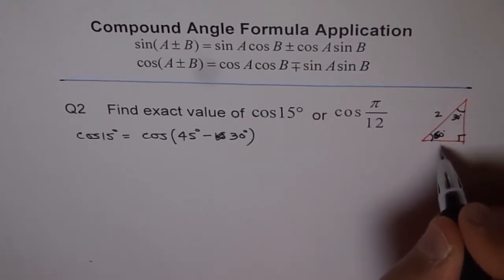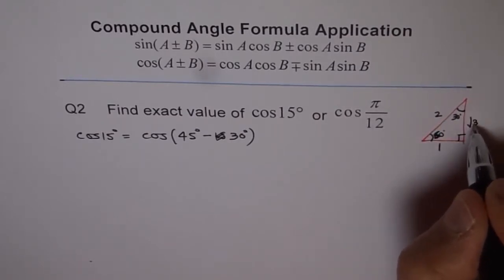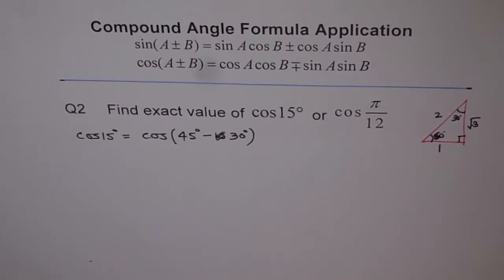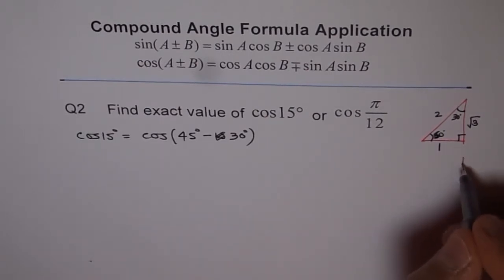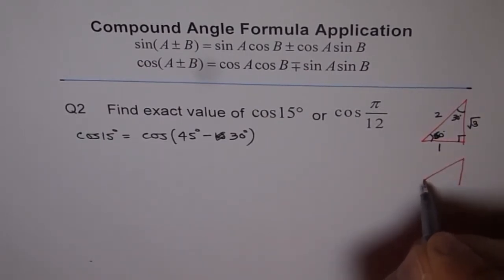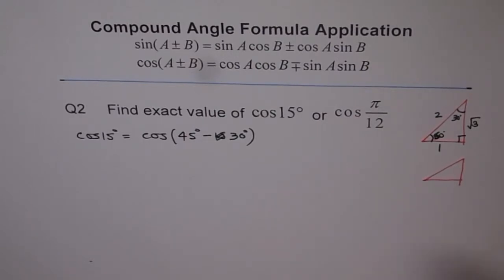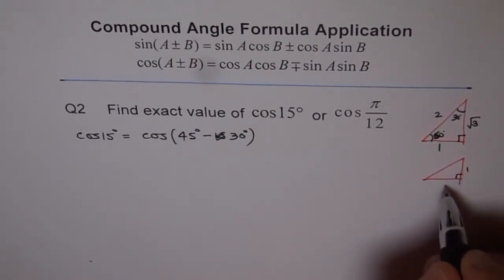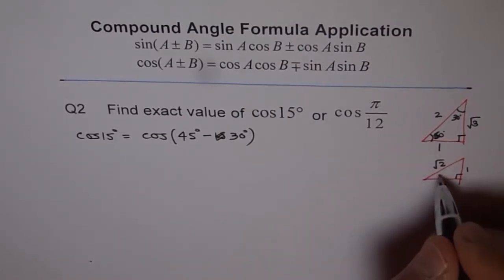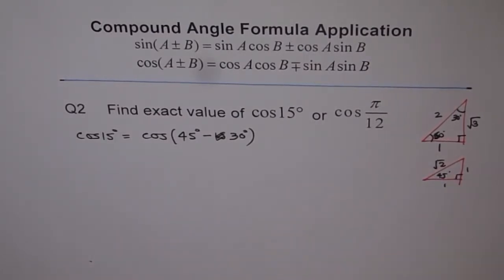Now here the sides are 2, 1 and square root 3. Let me also draw the other triangle which is 45 degree triangle. Now in the 45 triangle, it's always good to draw these triangles so that we can straight away read the values.